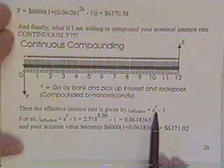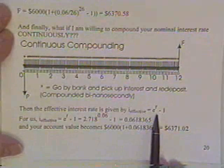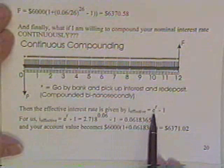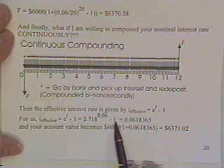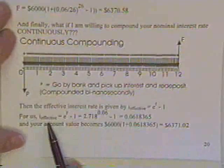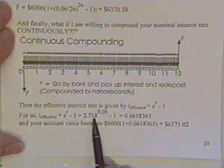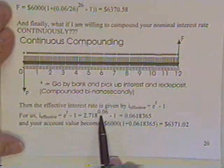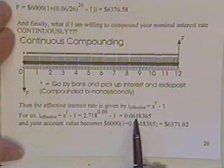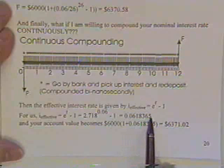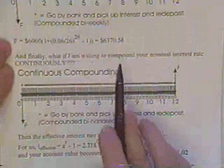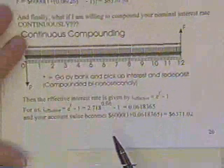Then the effective interest rate is given—this is listed in the book, can be proved if you want to see that proof—the effective interest rate is e to the rate, that will be the 6 percent number, minus 1. Therefore the effective rate in our case is 2.718 raised to the nominal interest rate 0.06 minus 1, and the interest rate then is 6.18365.